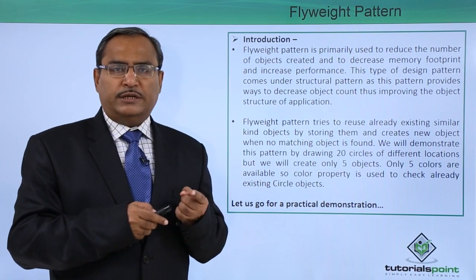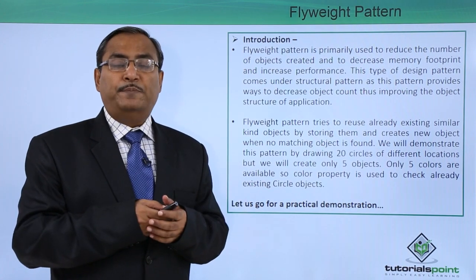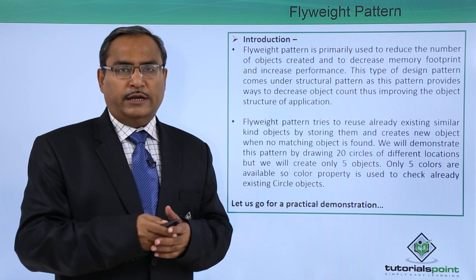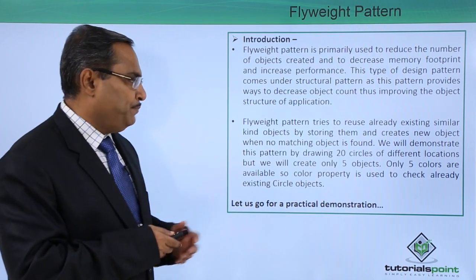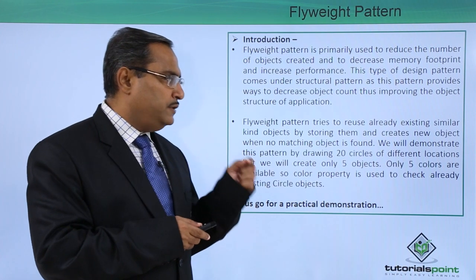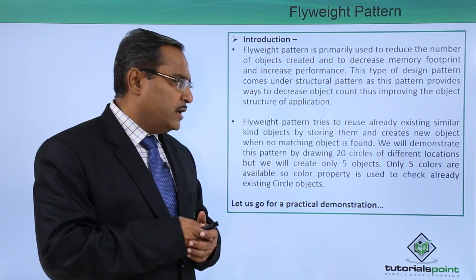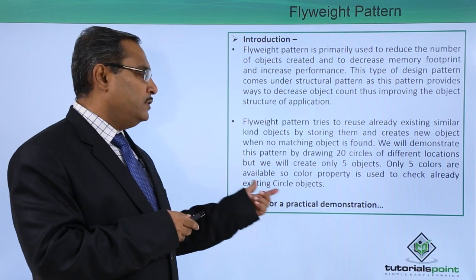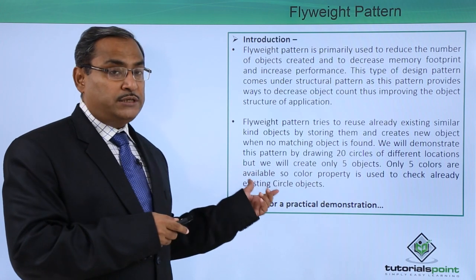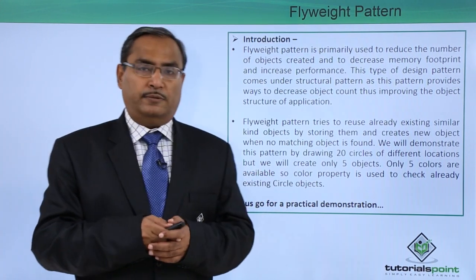Whenever some pre-existing object can serve our purpose, we will be reusing the pre-existing object. But if the object is not pre-existing, then only new objects will be created. We will demonstrate this pattern by drawing 20 circles at different locations, but we will create only 5 objects, as only 5 colors are available. The color property is used to check whether the object of a particular circle is pre-existing or not.